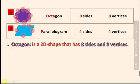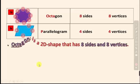The octagon is a 2D shape that has eight sides and eight vertices. So if an exercise asks for the shape with eight sides and eight vertices, you write 'octagon.'